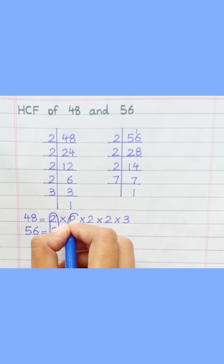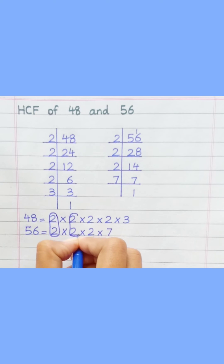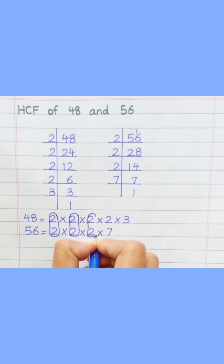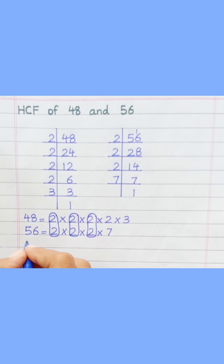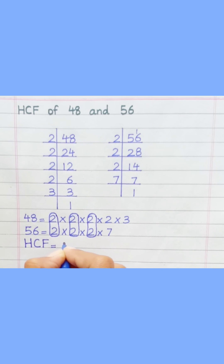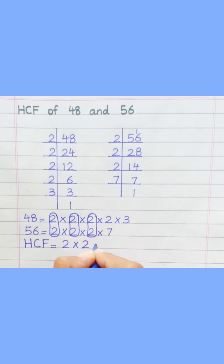Loop the common prime factors among both. HCF equal 2 multiply 2, multiply 2, equal 8.